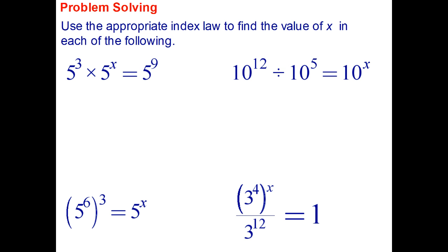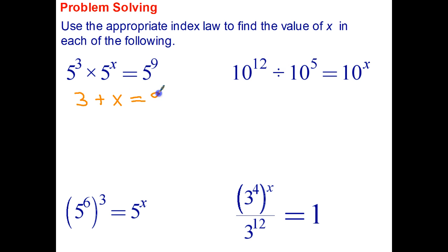The first one says: 5 to the power of 3 times 5 to the power of x equals 5 to the power of 9. We have to use index law 1 here — to multiply powers with the same base, we add indices. So that means 3 plus x must add to 9, and therefore x equals 6. We're sort of working backwards from what we've done before with index law number 1. Stop the video and see how you go on the remaining three questions.